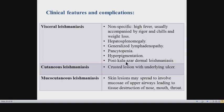Some patients develop hyperpigmentation, mainly seen in those with lighter skin, resulting in blackish discoloration. This is why visceral Leishmaniasis is called Kala-azar — an Indian term meaning 'black,' referring to this hyperpigmentation. In advanced cases, patients may develop lower limb or generalized body edema due to severe hypoalbuminemia, which is mainly nutritional in these advanced patients.